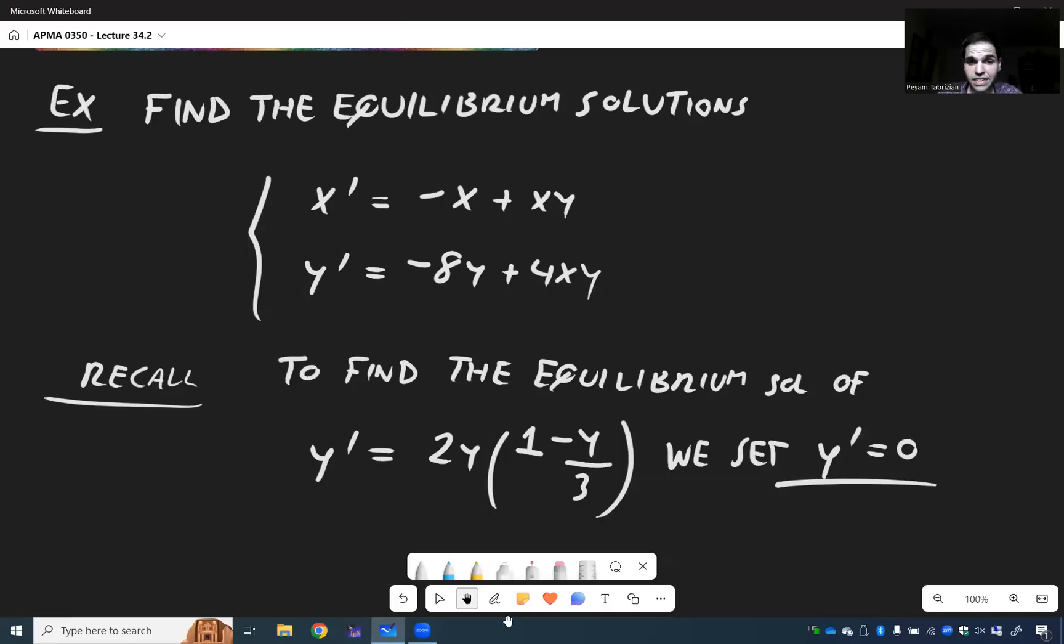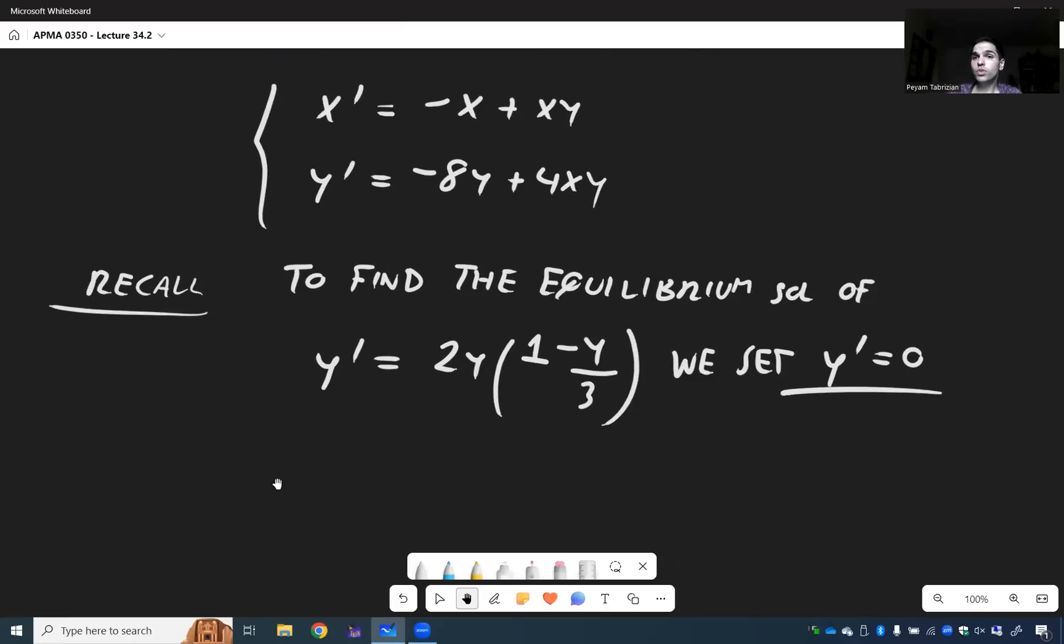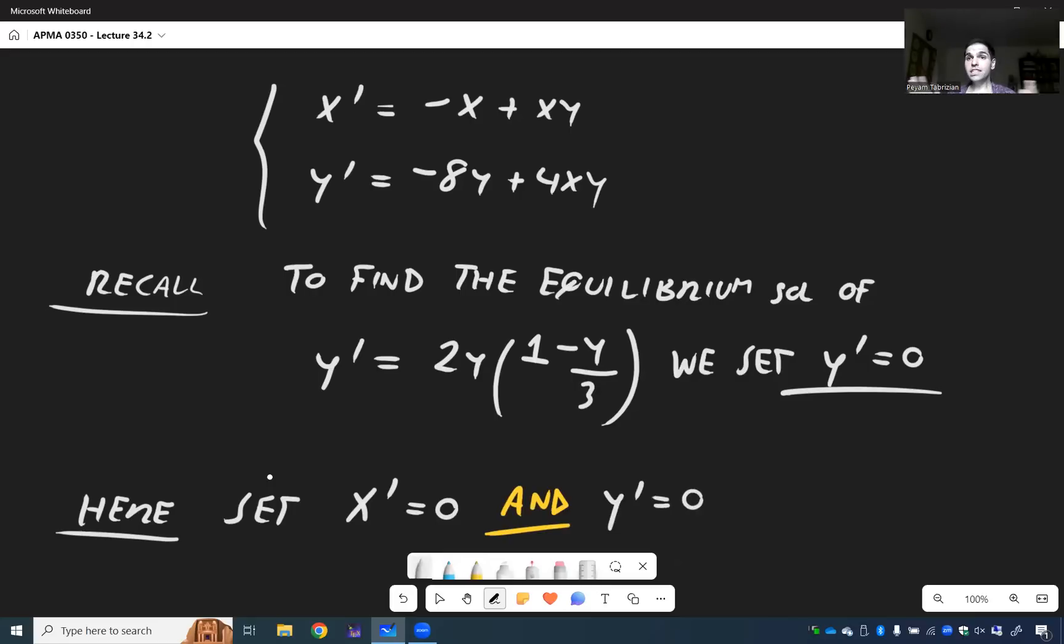And the nice thing is, same thing is true here, except you set both x prime equals 0 and y prime equals 0. And that's because equilibrium solutions don't move. So it won't move in the x direction and it won't move in the y direction.